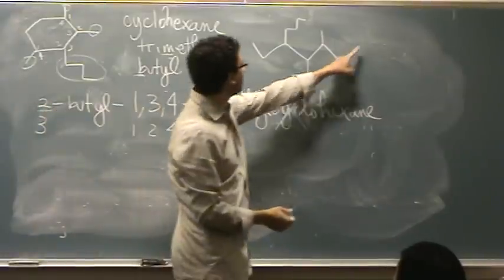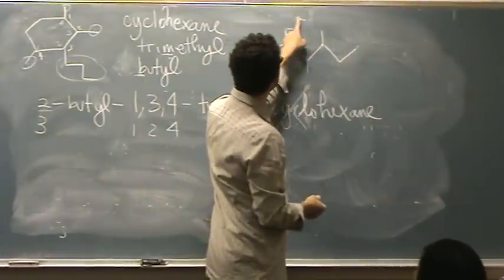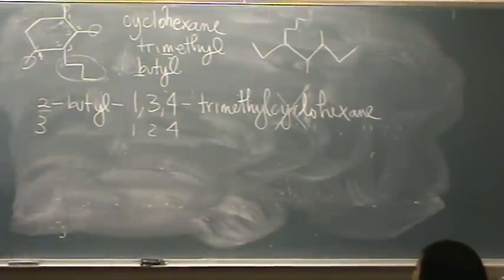Because the main chain would be 1, 2, 3, 4, 5, 6, 7, 8, 9. It's a nonane. With an ethyl and two methyl substituents. Yeah? Question? Yeah?